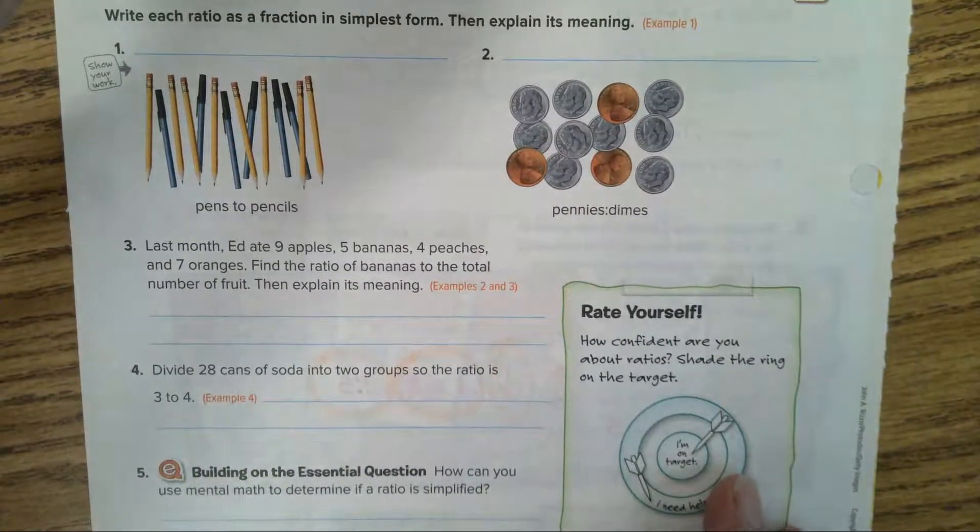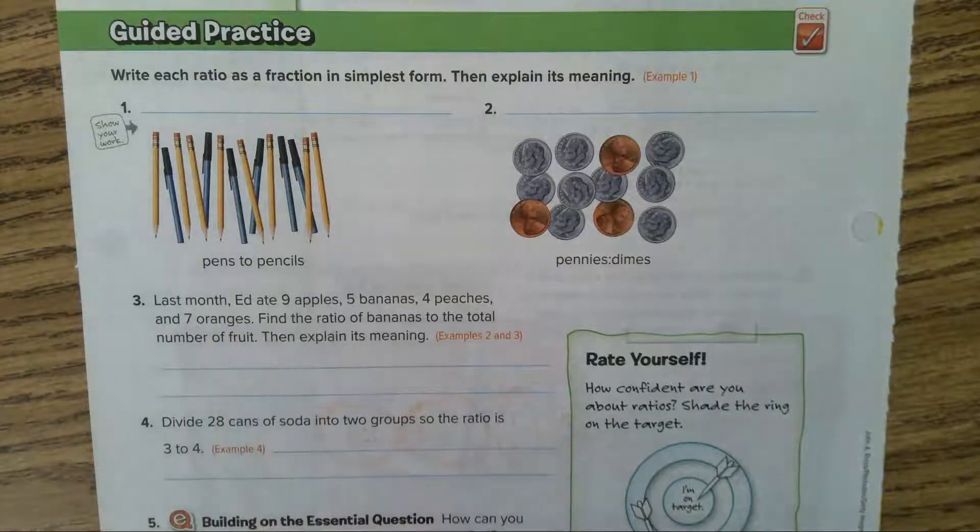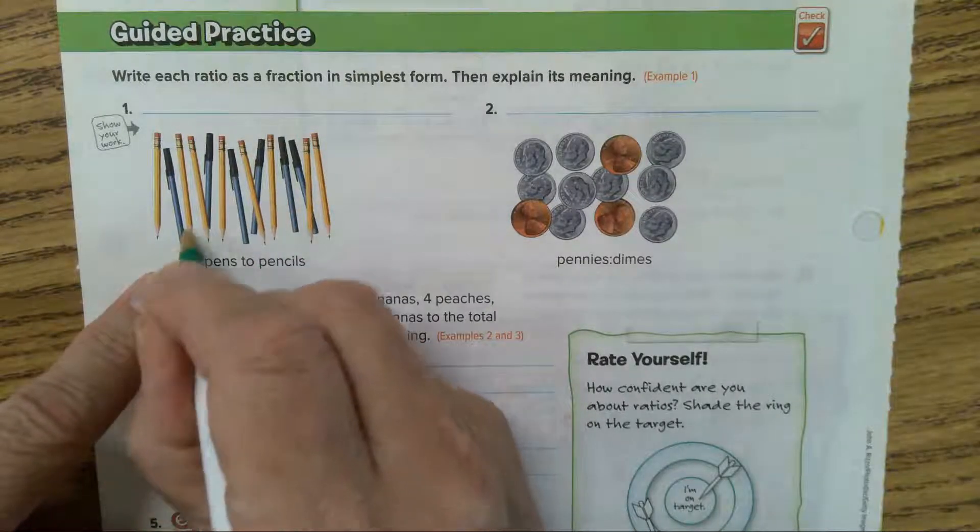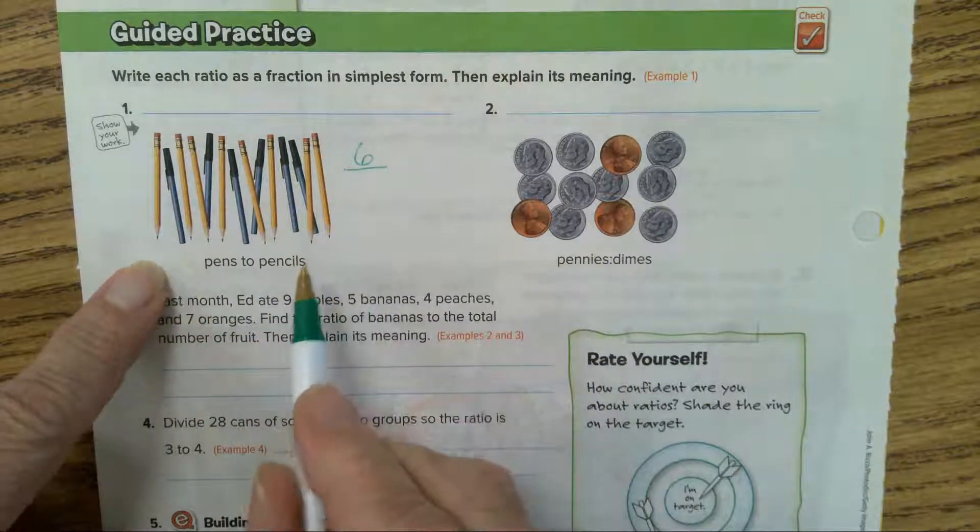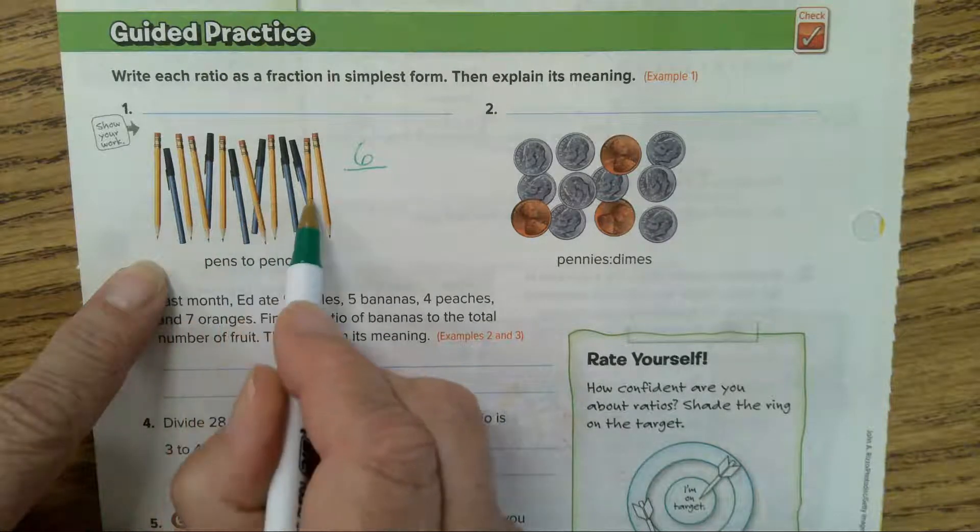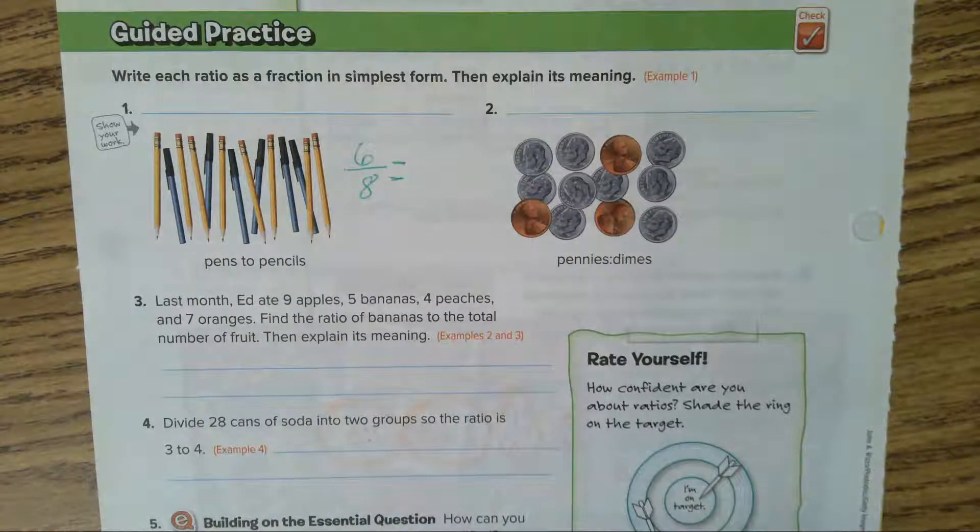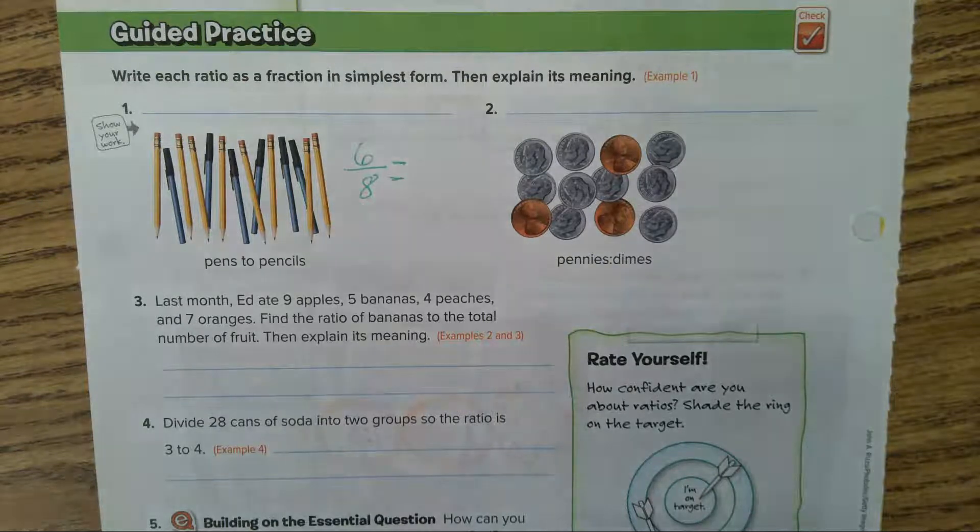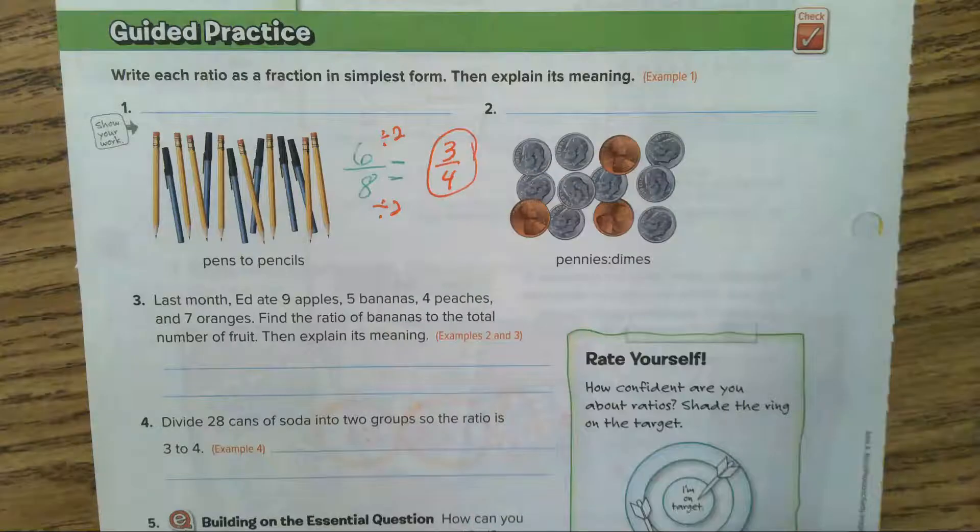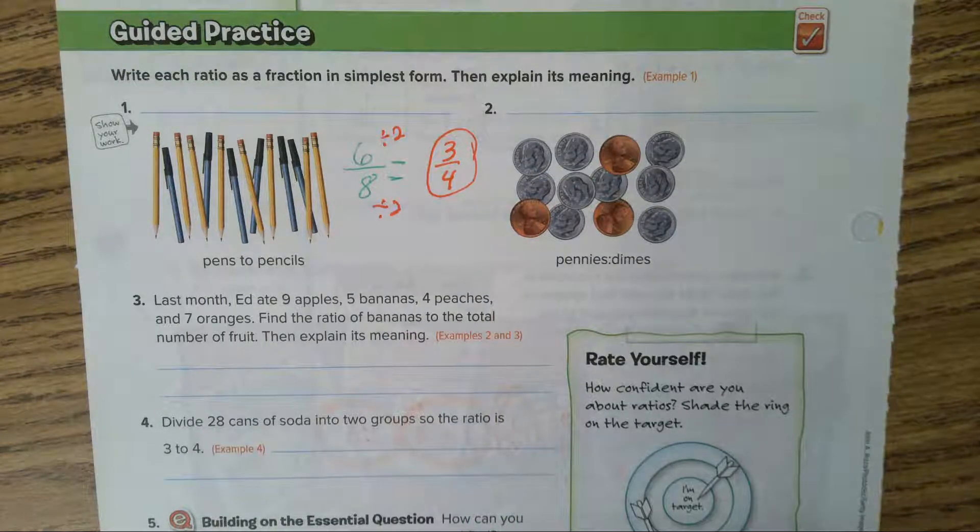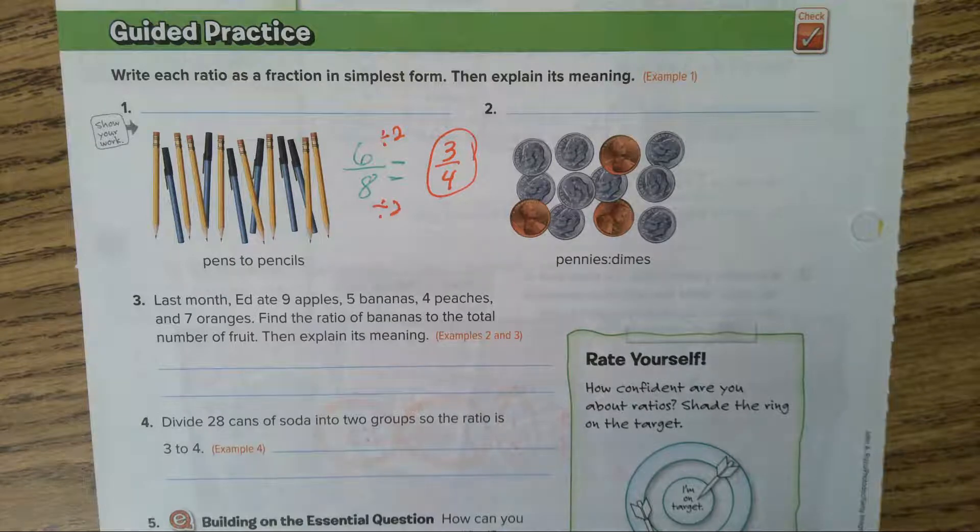Let's do the guided practice together. Write each ratio as a fraction in simplest form. Pens to pencils. Pens have to go first, so it's going to be 6 pens and 8 pencils. That will simplify. What will divide 6 and 8? Two. 6 divided by 2 is 3, 8 divided by 2 is 4. The answer is 3/4. You have 3 pens to every 4 pencils.